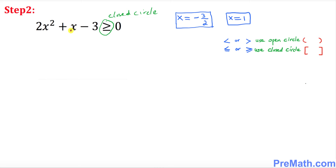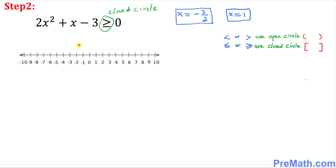The next thing we want to do is start graphing this inequality on a number line. Here is our number line. Let us look for negative 3 over 2 and 1. Negative 3 over 2 is the same as negative 1.5, and it is going to be a closed circle placed right in the middle. The value 1 is going to be right up here as you can see. Whenever you have a greater than inequality, both arrows are going to go in the opposite direction.